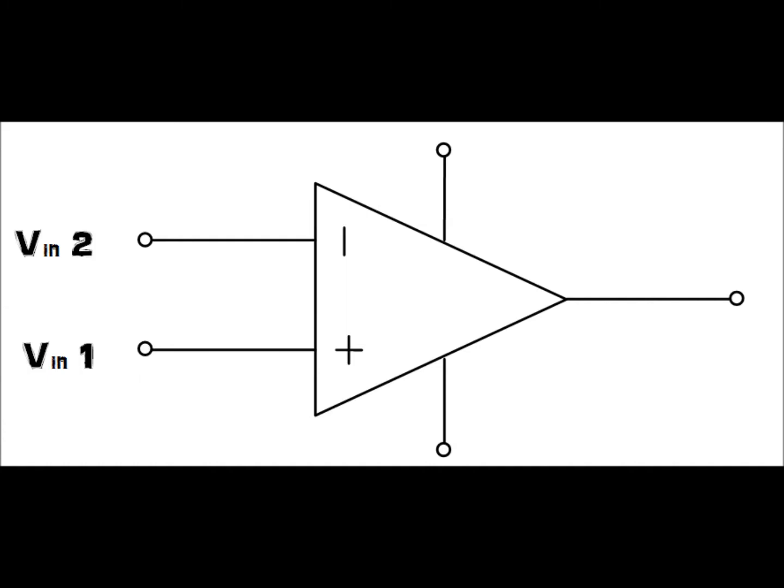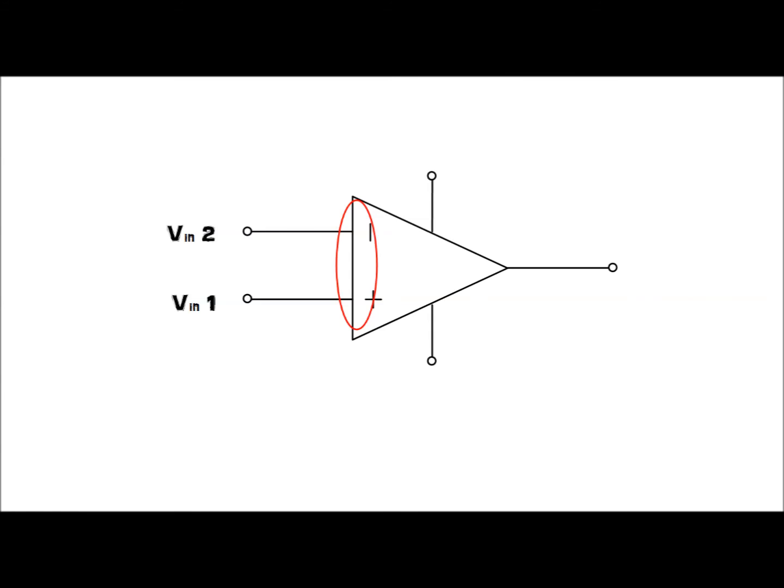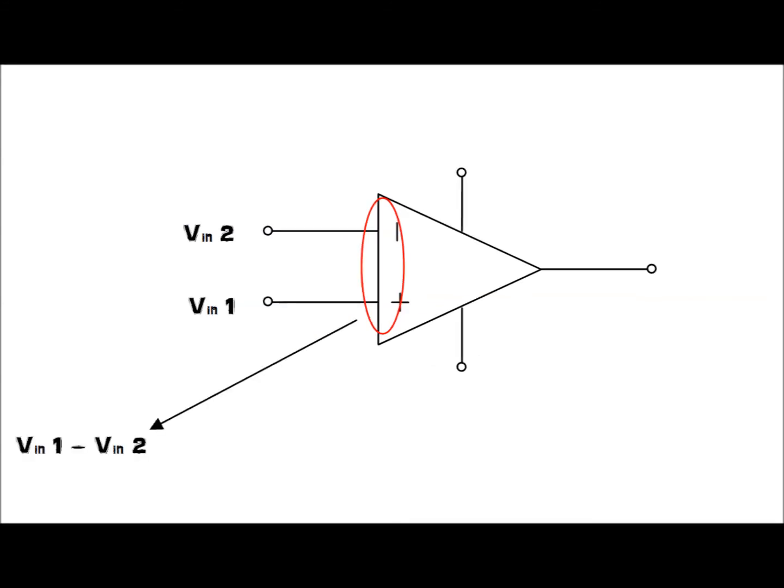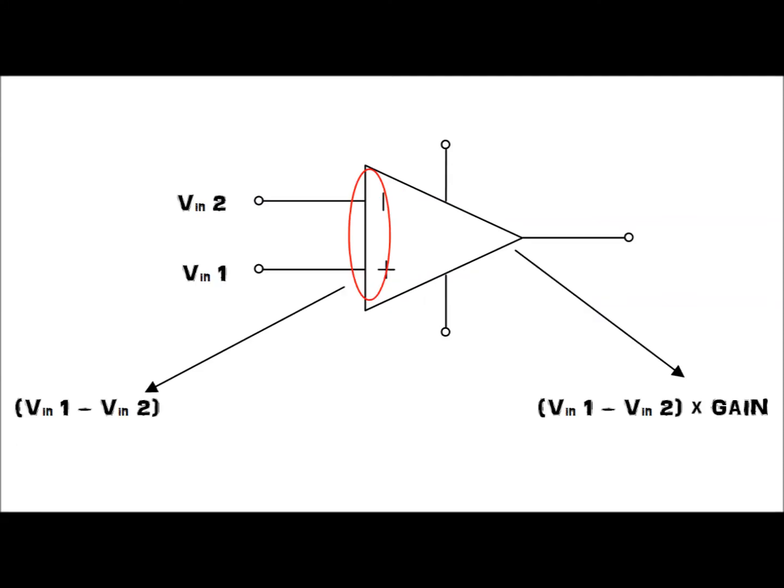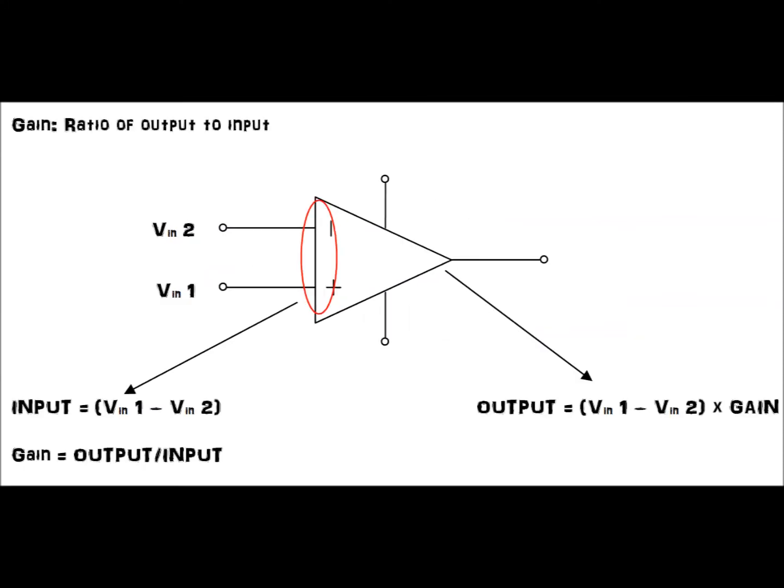To explain the functionality of the op-amp, we will name the non-inverting input v-in1 and the inverting input v-in2. The large input resistance sees the voltage difference between the two inputs. The amplifier then increases the voltage by a factor called the gain. The resulting signal emerges at the output.